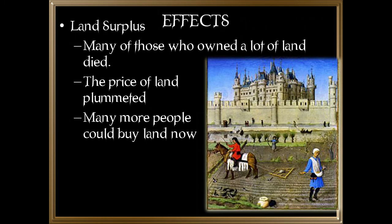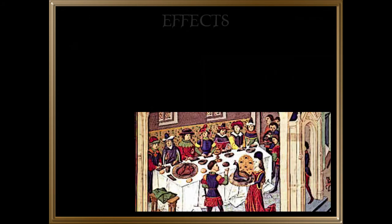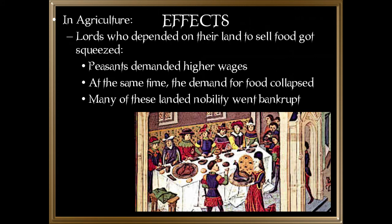There was also a land surplus. Many who owned a lot of land died from the Black Death, so the price of land plummeted and many more people could now buy it. In agriculture, noble lords who depended on their land to sell food got financially squeezed — peasants demanded higher wages while the demand for food collapsed, and many of the landed nobility went bankrupt.